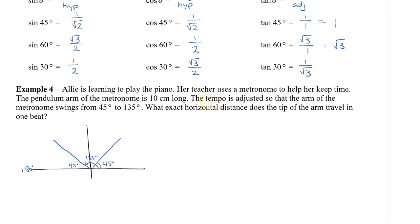What we want to do is as this metronome, this pendulum arm moves, it's going to go like so. The arm will hit a point up here. The tempo is adjusted to this angle. It is 10 centimeters long. So, this is going to be 10 and 10.